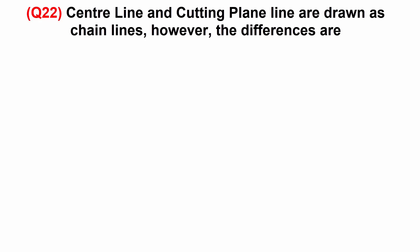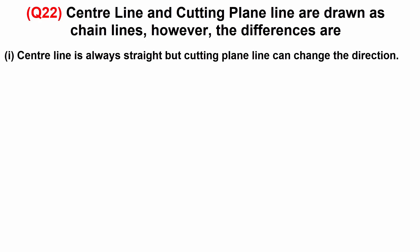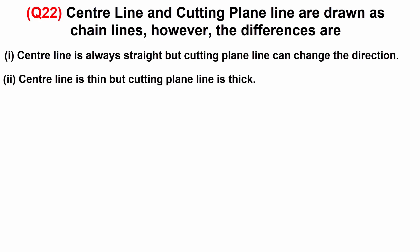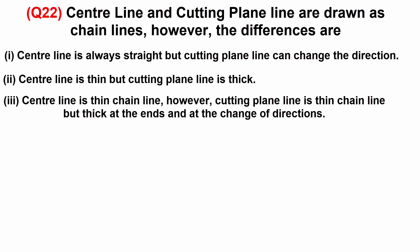Center line and cutting plane line are drawn as chain lines. However, the differences are: 1 — center line is always straight but cutting plane line can change the direction. 2 — center line is thin but cutting plane line is thick. 3 — center line is thin chain line.